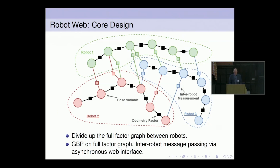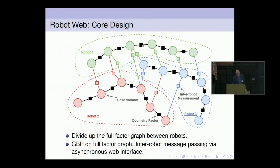This slide covers the core idea of what we call Robot Web, which is how we can use this for multi-robot localization. We think about the full factor graph for a multi-robot problem. In this example, we have three robots — green, blue, and red — each moving through the world. The big circles are pose variables for each robot at particular points in time, shown across six time steps.